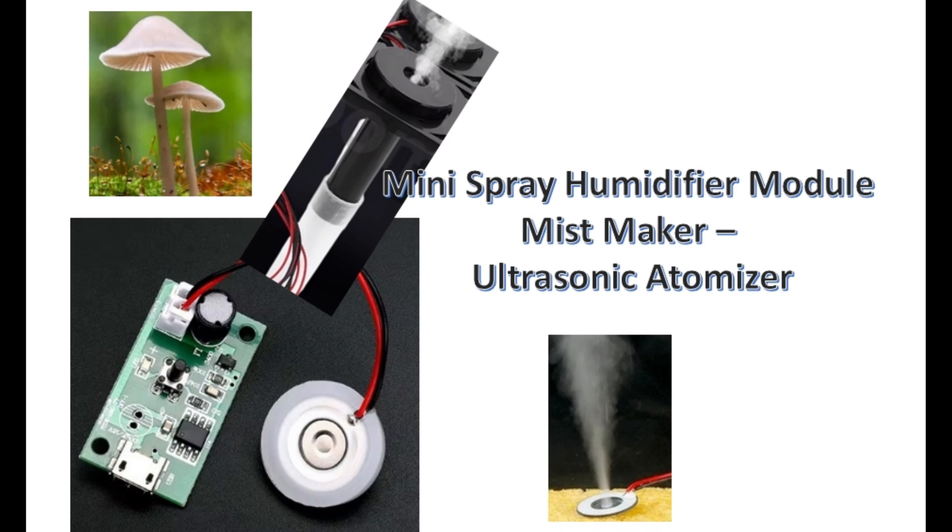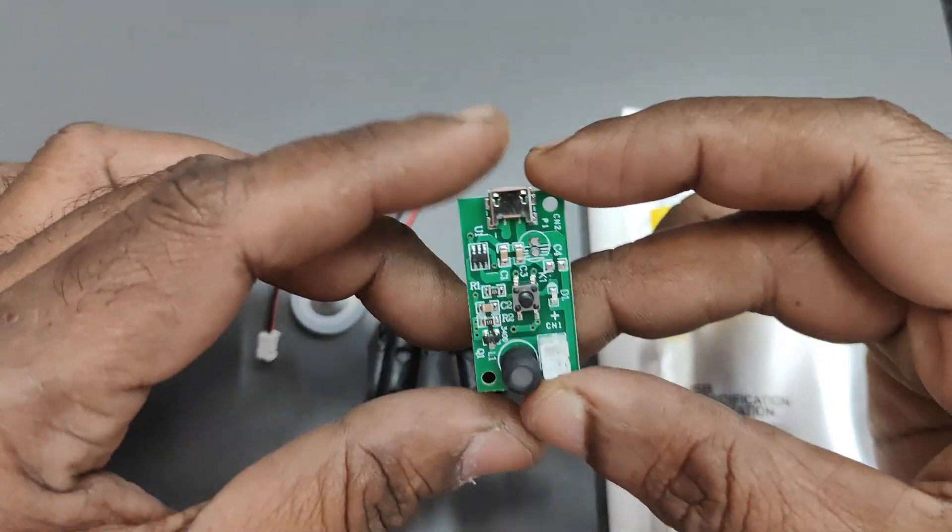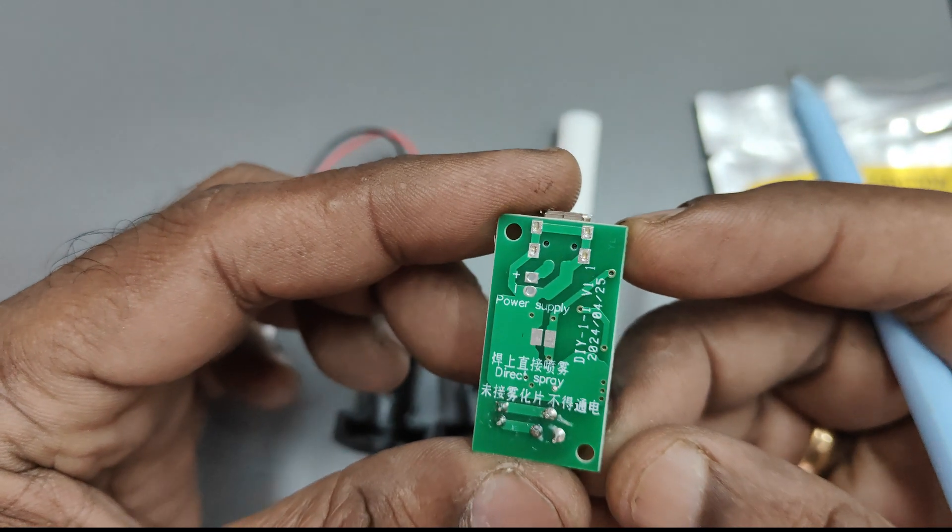Hello all, this video is about a mini spray humidifier module which is used to add moisture to the air to prevent dryness of skin, and also it is used in cultivation of mushrooms.